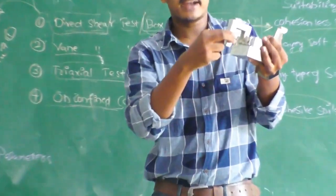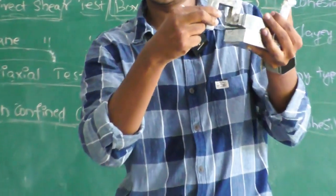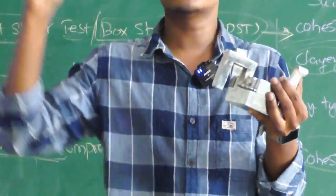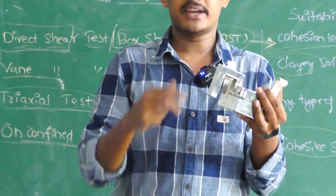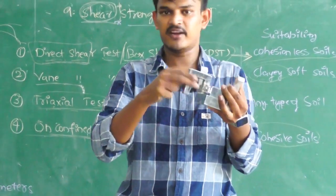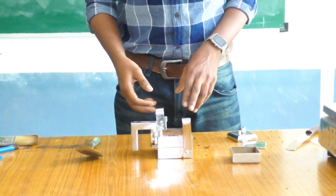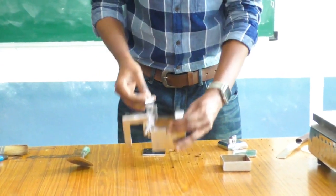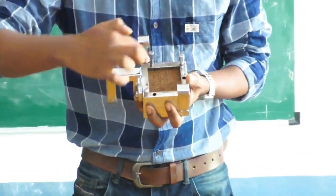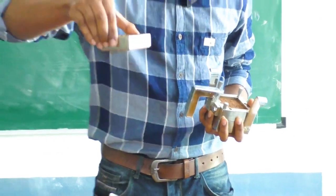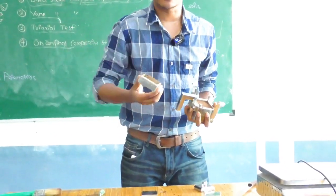The normal stress is kept constant and we increase the shear stress applied on the sample. We note the value of shear stress at which the sample fails. We repeat this for two to four iterations. This is the shear box. We need to collect the sample from the field by means of ramming, same as we did for the core cutter method.